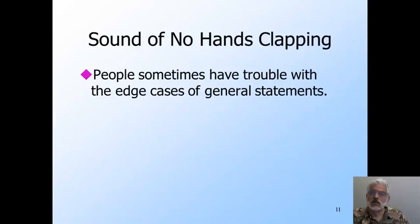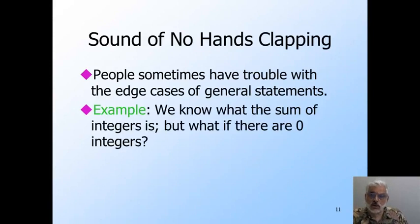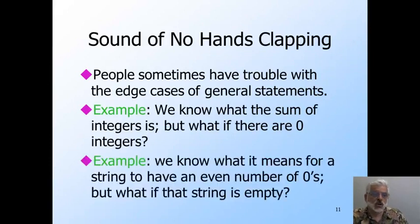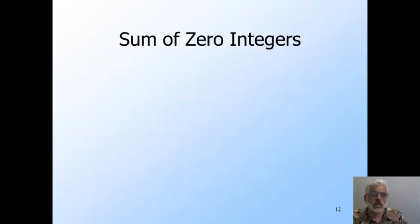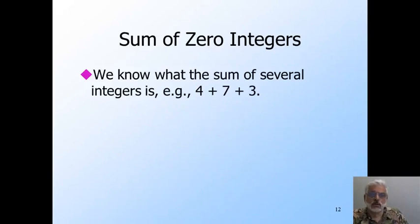I now want to talk about a point of confusion that comes up in several places. What happens when you try to apply an operation to 0 things? For example, we know what it means to sum 2 integers or 10 integers, but what if we are asked to sum 0 integers? Or if I have a string of 0s and 1s, it makes sense to ask whether the string has an even or odd number of 0s. But what if the string is empty? So, for example, 4 plus 7 plus 3 equals 14, no problem. If I just want to sum 4 plus 7, cross out the 3, again no problem, that's 11. If I just want to sum the 4, no 7 there, fine, that sum is 4.